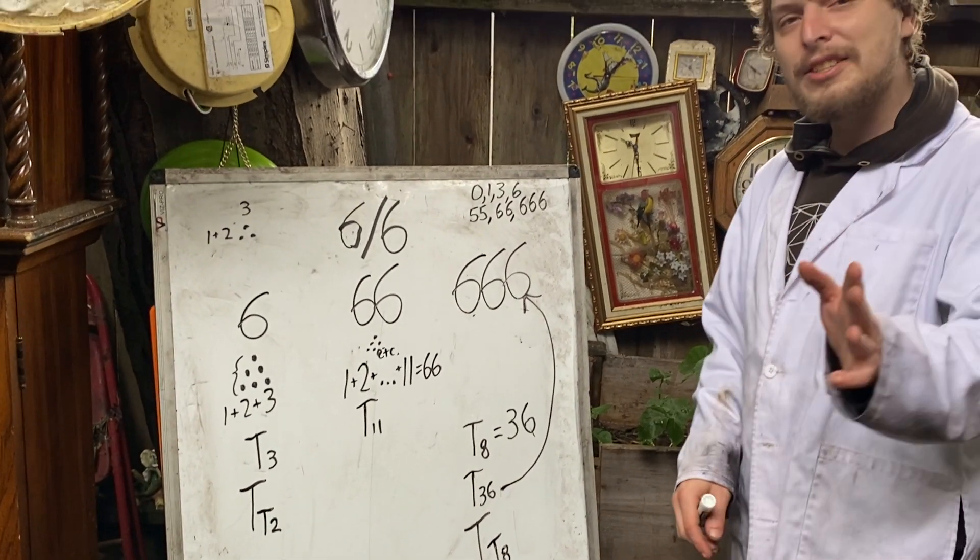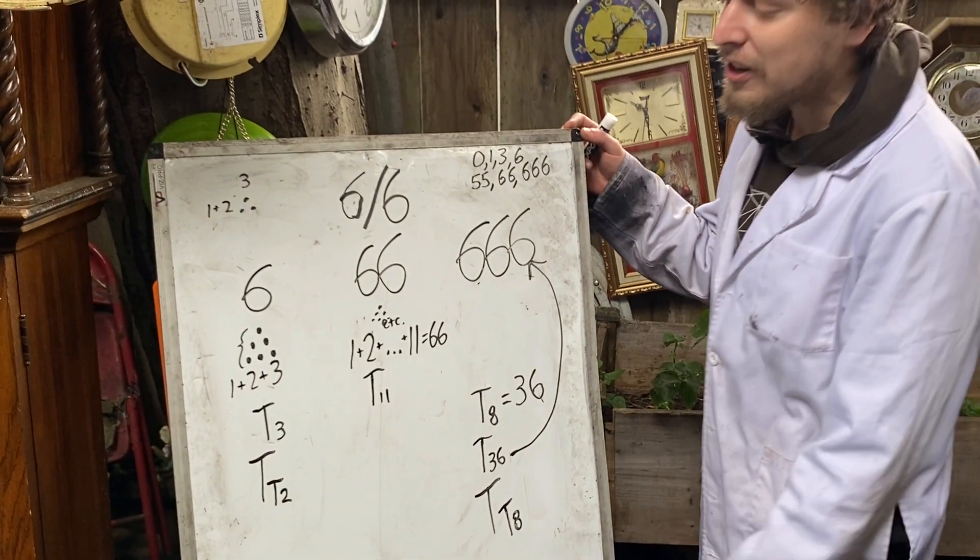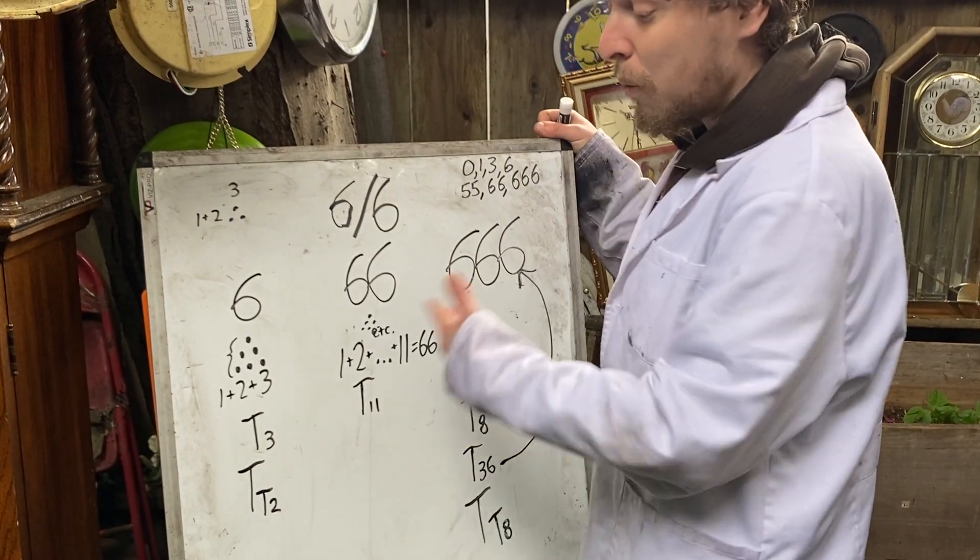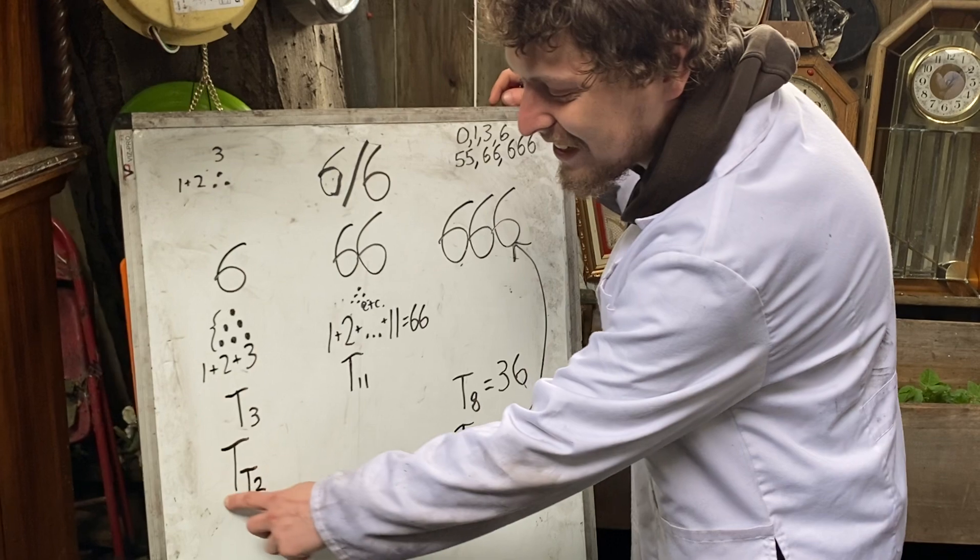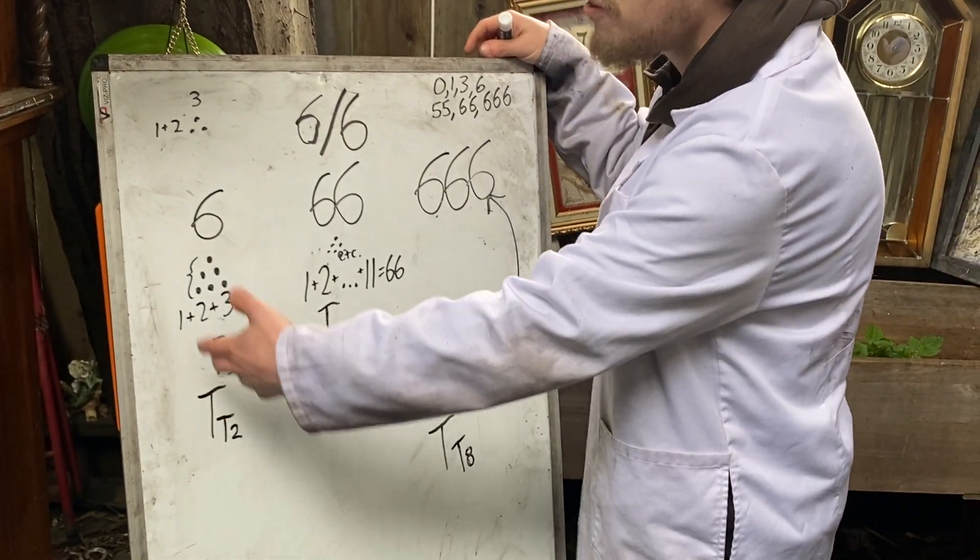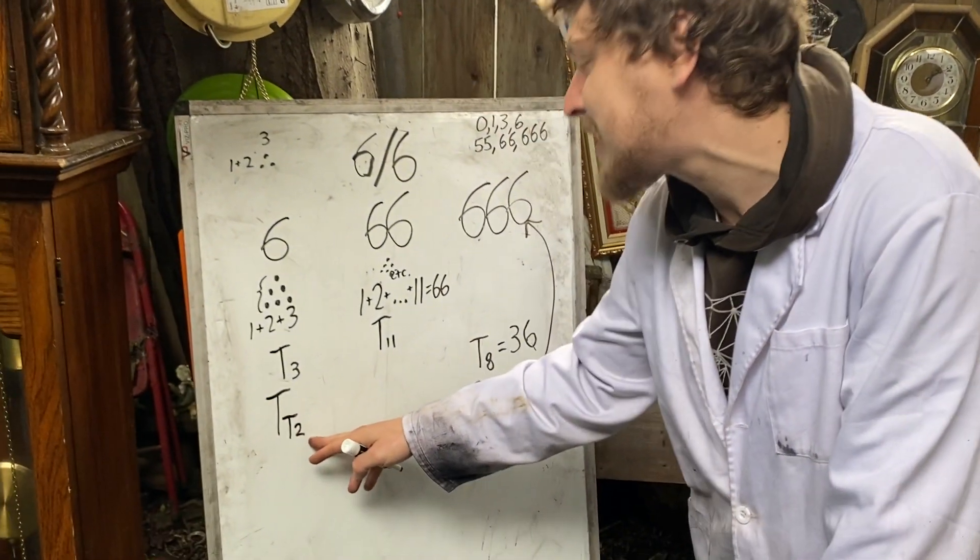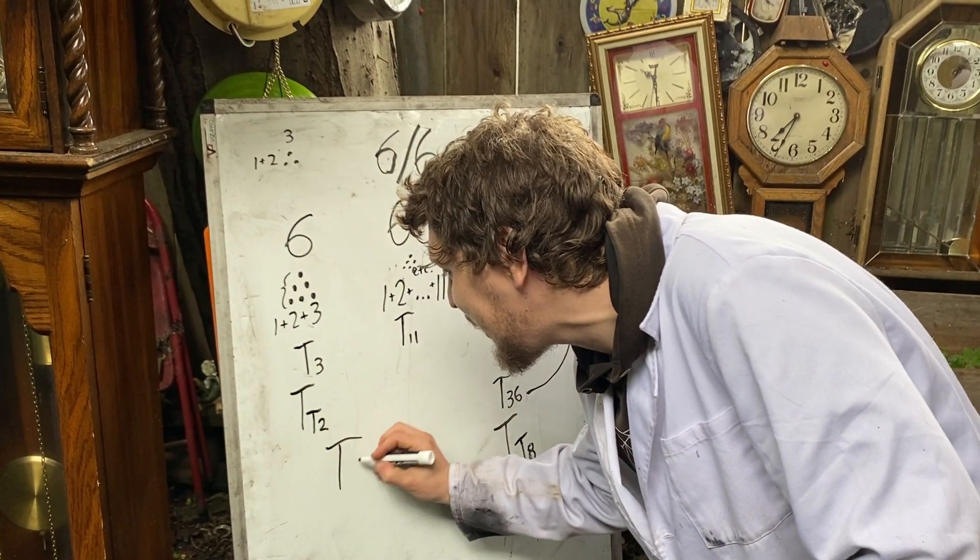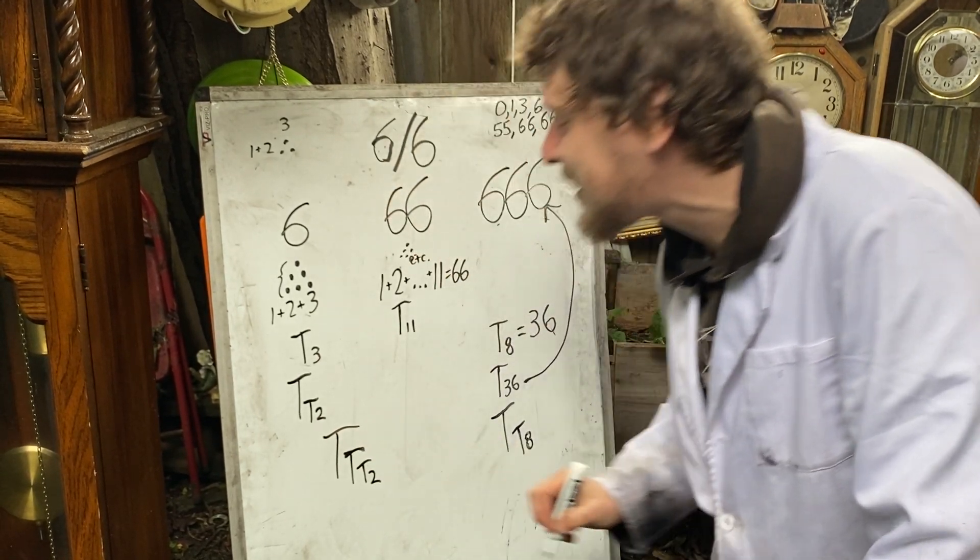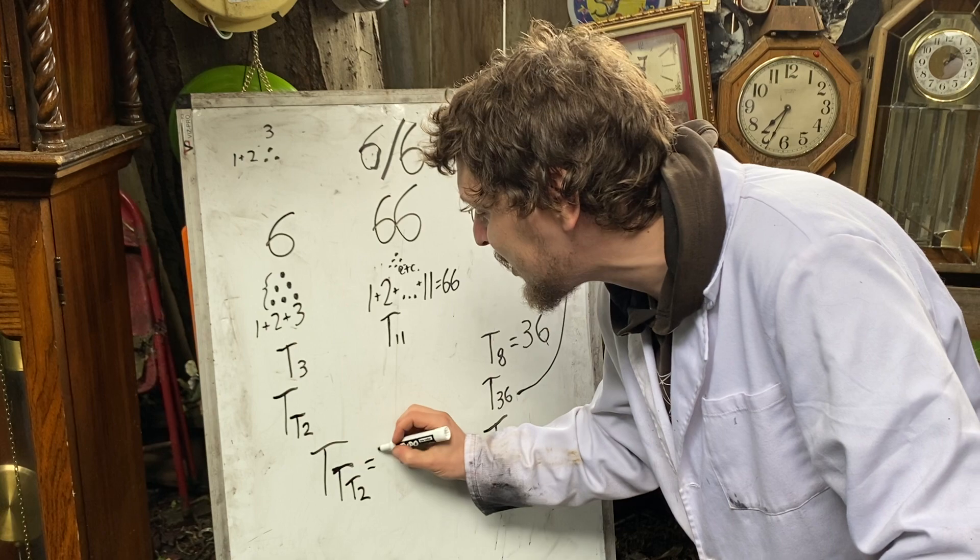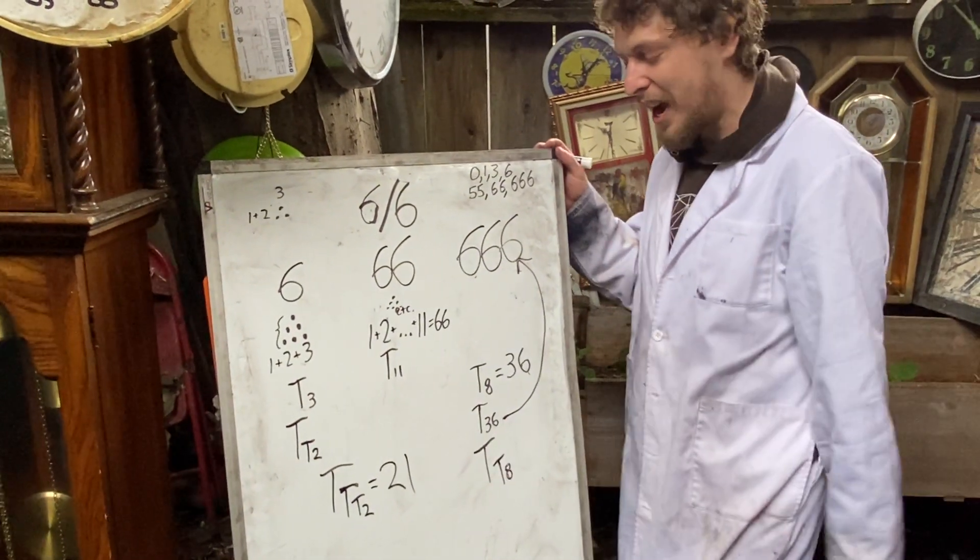Now we could take this further to see what are some triply triangular numbers. For example, if I saw which triangular number is the triangular number whose index is this whole thing, then I would essentially be saying this was 6. So T of T of T of 2 would be the sixth triangular number, which is 21. So we could call that triply triangular.